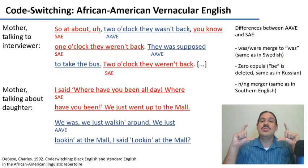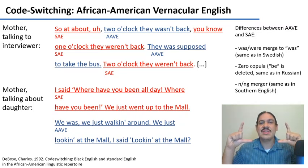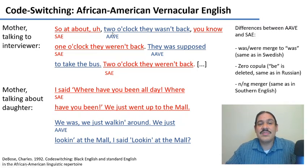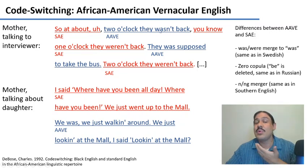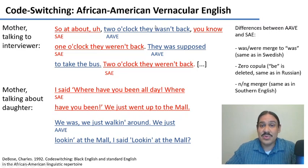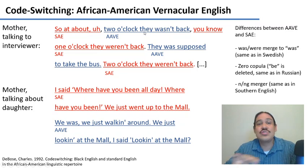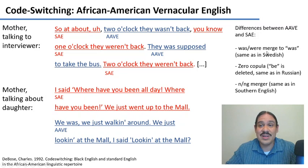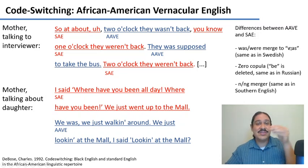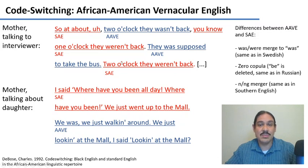It's the same case when code switching between two varieties of a single language, like Standard American English and African-American Vernacular English, or AAVE. Some defining features of AAVE include: 'at two o'clock, they wasn't back' — using 'wasn't' instead of 'weren't.' This lack of number agreement, where the verb takes only one form regardless of subject number, is extremely common across many languages, including Germanic languages like Swedish. You also see it in 'they was supposed to take the bus,' where the verb doesn't match number — because many languages don't do this.